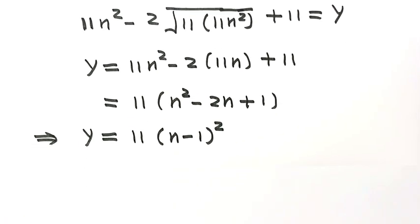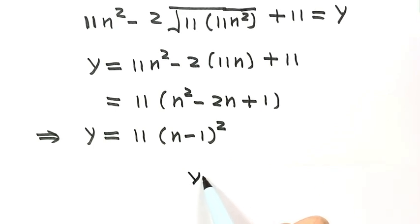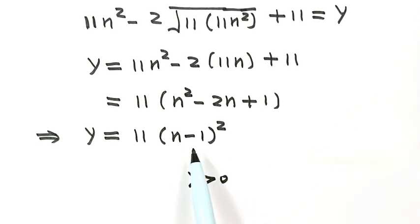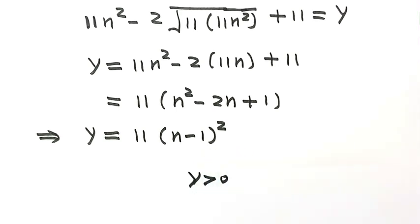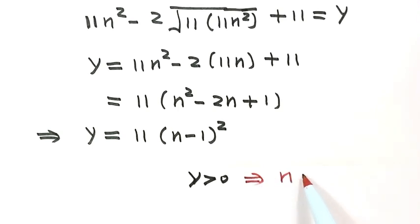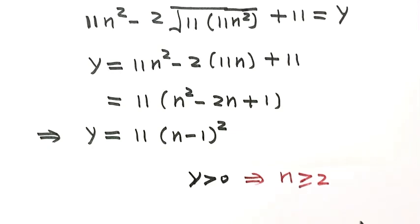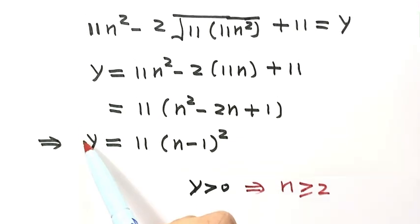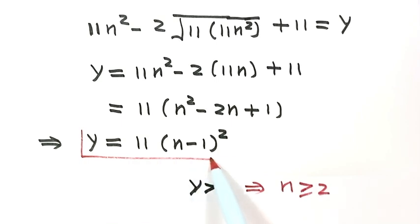Because y must be greater than 0, (n minus 1) squared must be greater than 0, which implies n must be greater than or equal to 2, where n is a positive integer.